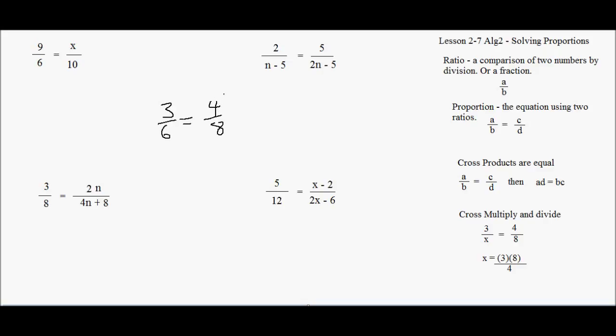There's a very important thing about this that we want to look at, and that is cross-products are equal. If A over B equals C over D, then AD is equal to BC. Notice that this is 24, and three times 8 is 24, and that's always true. Cross-products are always equal.